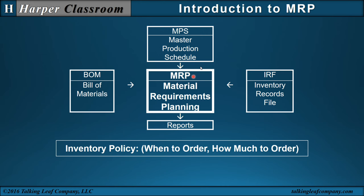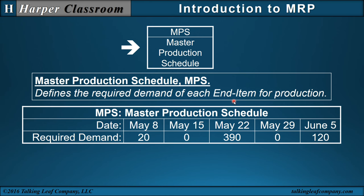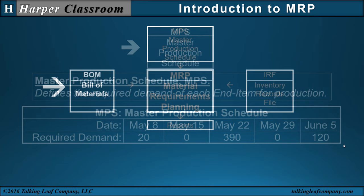Let's start with the master production schedule. The MPS defines the required demand of each end item for production. The term 'end item' that MRP uses is the same as a product, finished goods, or final assembly — but in MRP it's referred to as an end item. In our example, here's our required demand, and the time difference is seven days, so this is a weekly MPS.